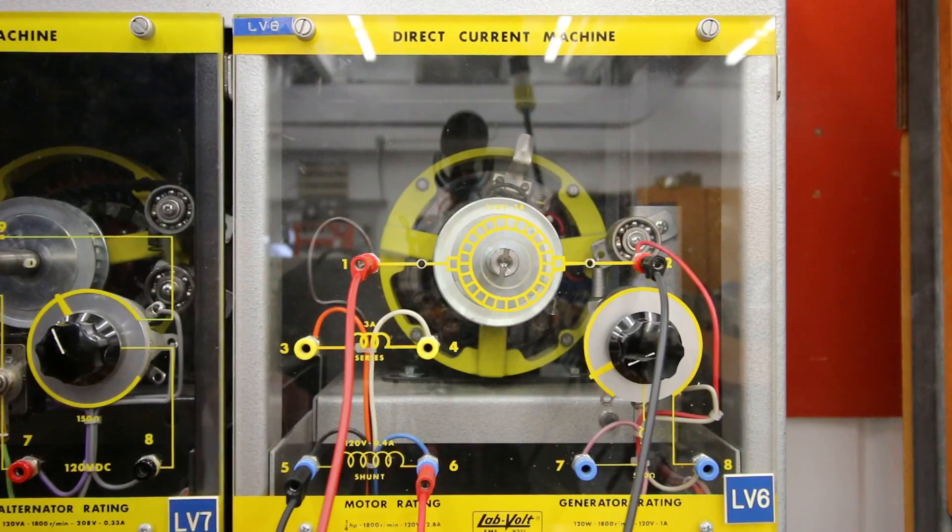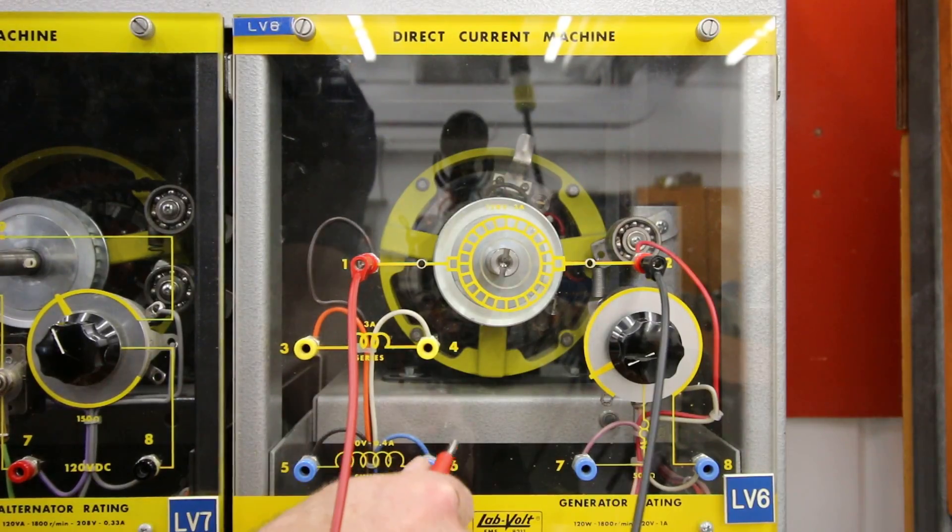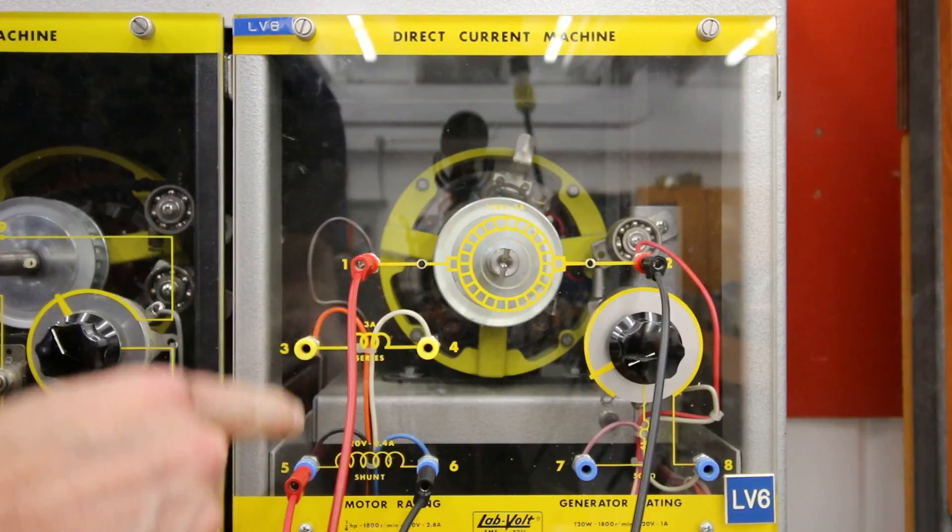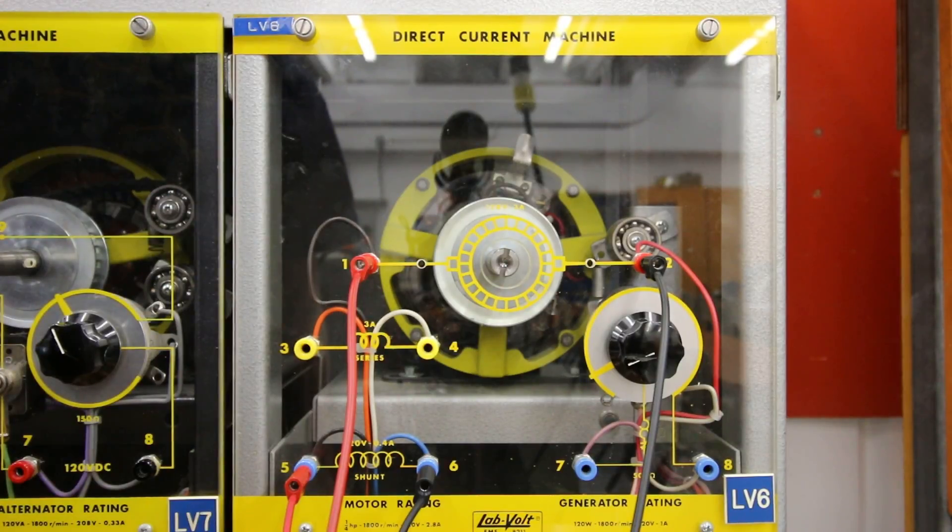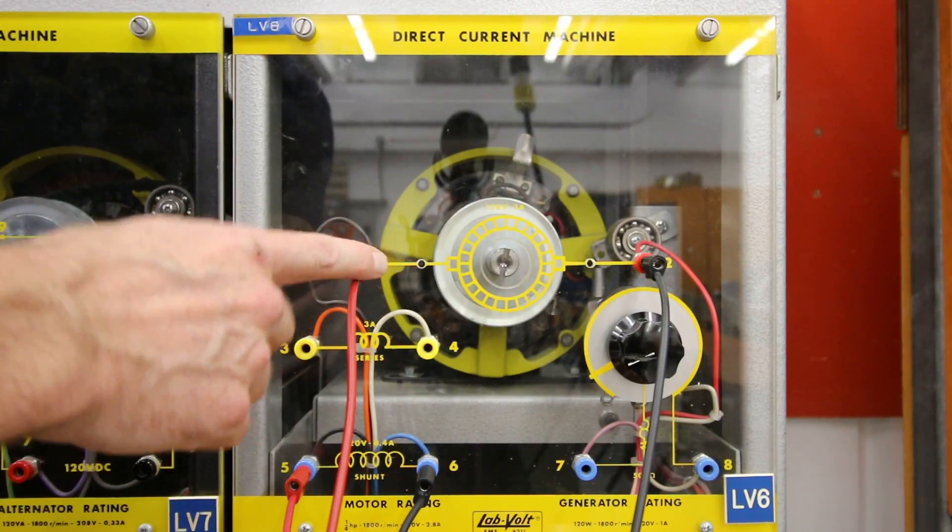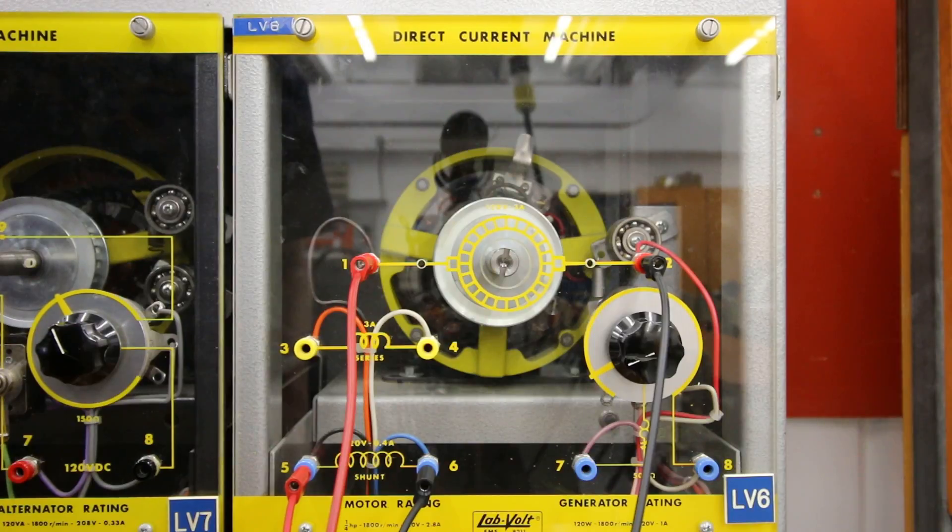So, in order to change the direction rotation of a shunt motor, I can change either the armature or the shunt field polarity. Convention is to change the armature, though.